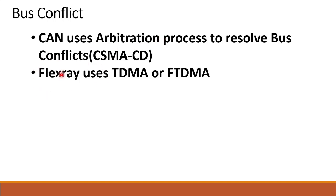FlexRay uses TDMA, or Flexible TDMA — Time Division Multiple Access and Flexible Time Division Multiple Access — to solve bus conflicts. For example, FlexRay has 5 nodes. Each node is allocated a specific time slot, so we can communicate with each particular node without conflict.